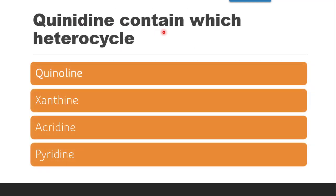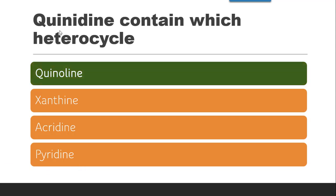The next question is: quinidine contains which heterocycle — quinoline, xanthine, acridine, or pyridine? From the name itself it is very clear that quinidine contains quinoline as its heterocycle.